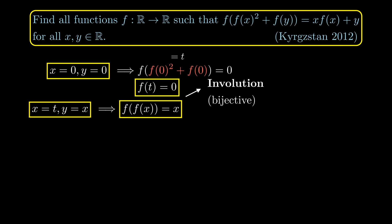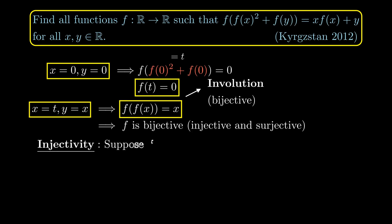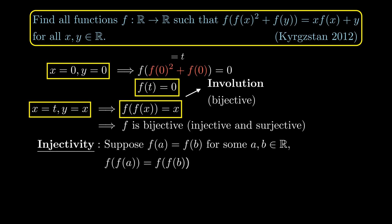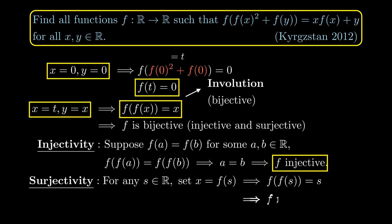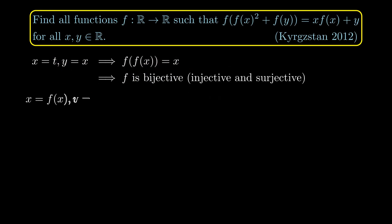An involution is bijective — f is both injective and surjective. To prove injectivity, suppose f(a) = f(b); applying f to both sides gives f(f(a)) = f(f(b)), so a = b. Hence f is injective. For surjectivity, for any real number s, I can take f(s) as an input such that f(f(s)) = s, so every s is in the image. Therefore f is bijective.